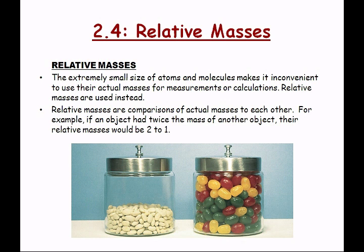The extremely small size of atoms and molecules makes them inconvenient to use their actual masses for measurements. Their actual masses are on the order of 10⁻²⁴ to 10⁻²⁶ grams — extremely small numbers. We don't have a good relative basis for understanding that scale, so we need different thinking. Instead, we use relative masses and compare atoms to each other.